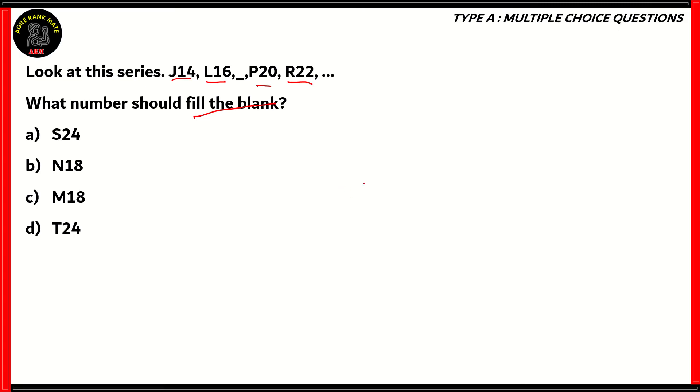So how do we solve this question? Well, let's write the letters and the numbers differently. So you have J, L, blank, P, and R. You have 14, 16, blank, 20, and 22.